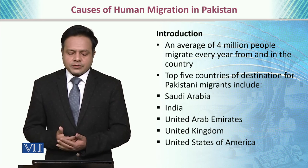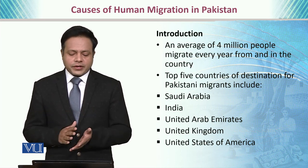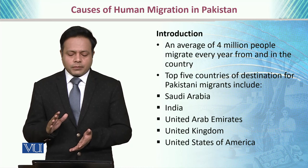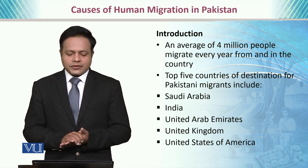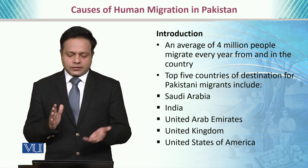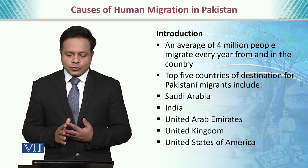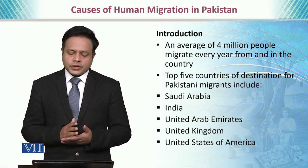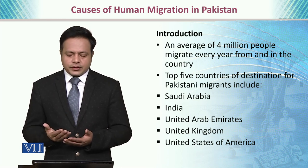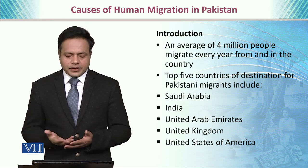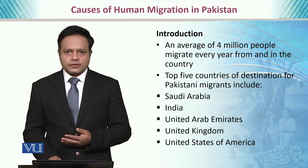On average, 4 million people migrate every year from and within Pakistan. The top five countries of destination for Pakistani migrants include Saudi Arabia, India, United Arab Emirates, United Kingdom, and United States of America.